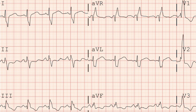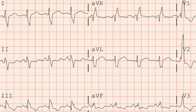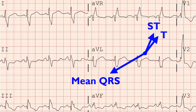Looking at the limb leads, for the most part these ST segment and T wave changes are typical of a secondary repolarization abnormality. The changes in lead 2 aren't 100% characteristic, but it's not a big deal if it's often one lead. The frontal plane QRS vector is oriented rightward, consistent with right axis deviation, while the T wave and ST segment vectors point nearly opposite to it on the left side — typical of a secondary repolarization abnormality from a bundle branch block.